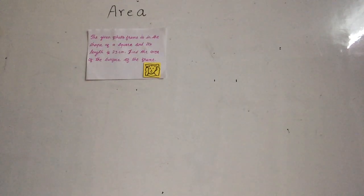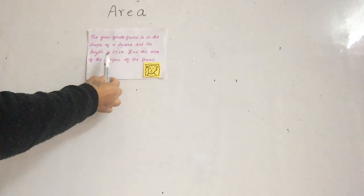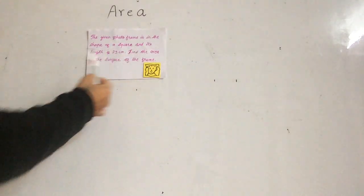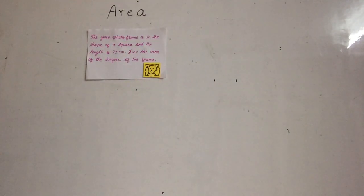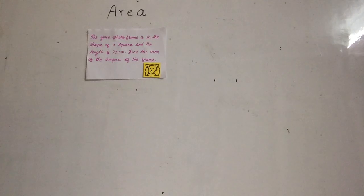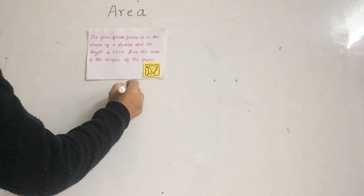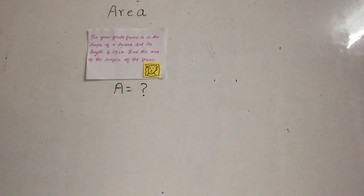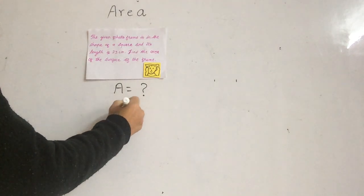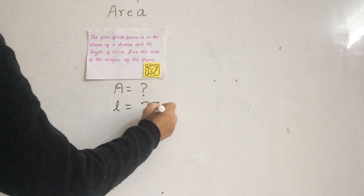There is one question — the first problem of area. The given photo frame is in the shape of a square and its length is 23 cm. Find the area of the surface of that frame. A square has four equal sides, so we have to find the area of this frame. The length L is 23 cm.